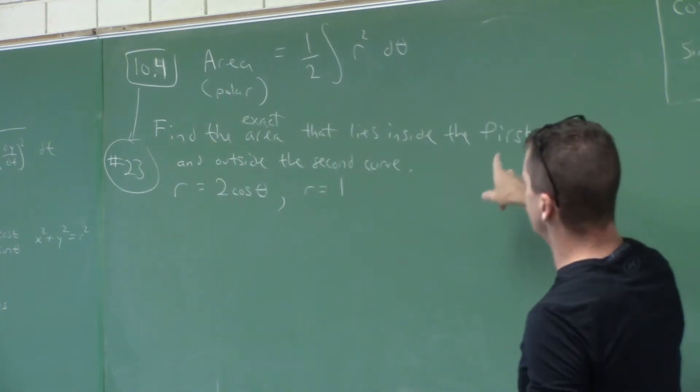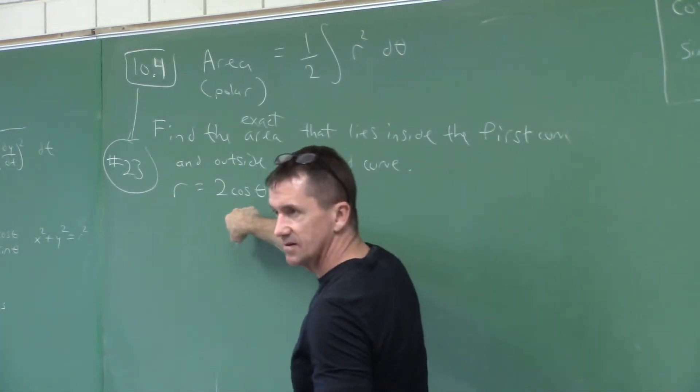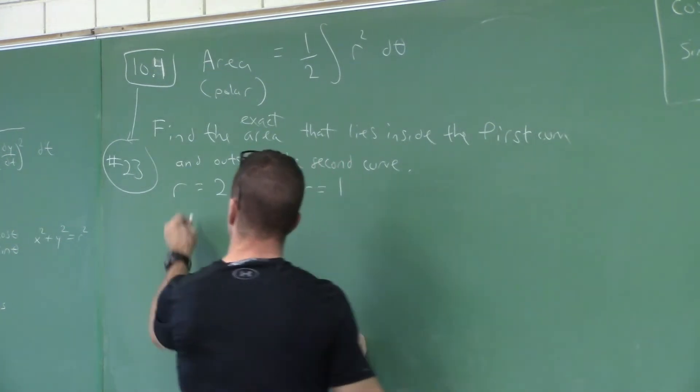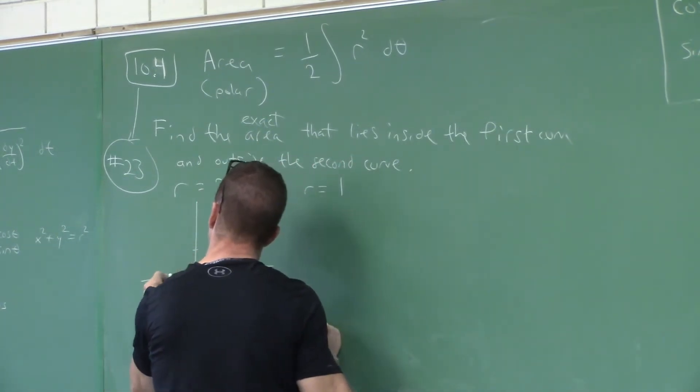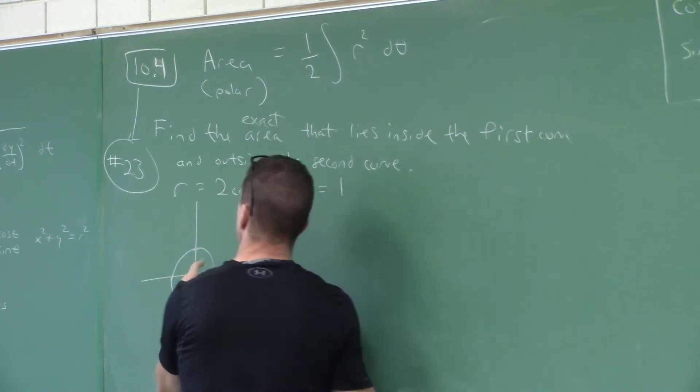We're going to find the exact area that lies inside this curve and outside this curve. Now this is what it looks like. You can look at it on your calculators too. What's a circle of radius one look like? It's just like that. Here's r equal to one.